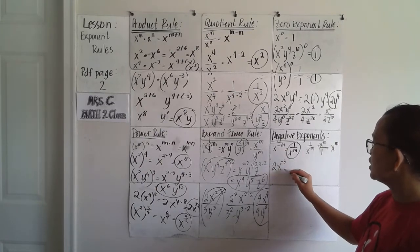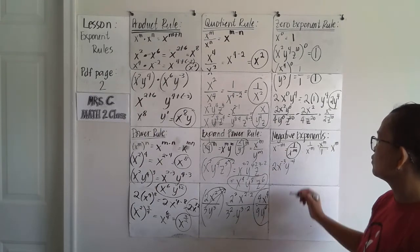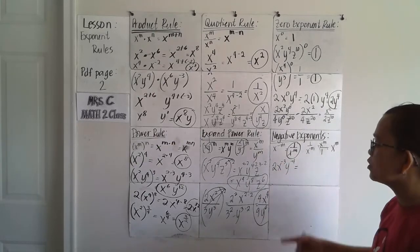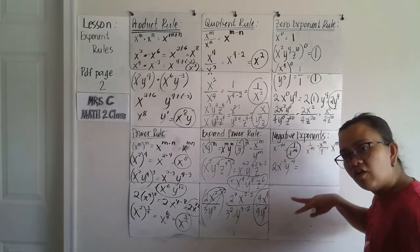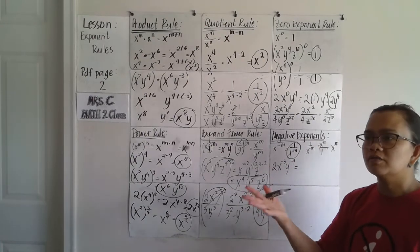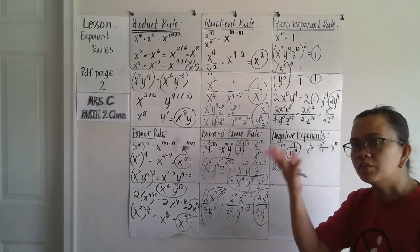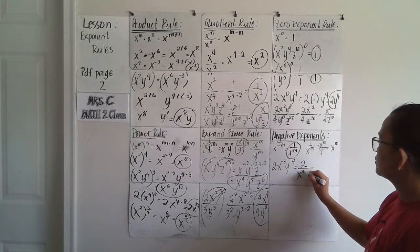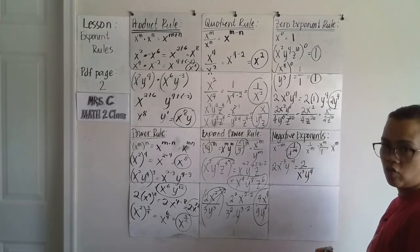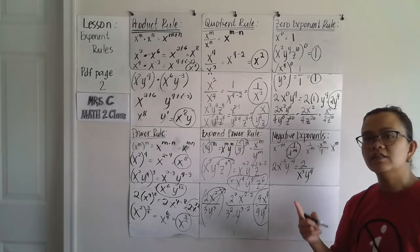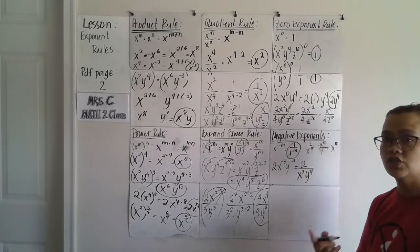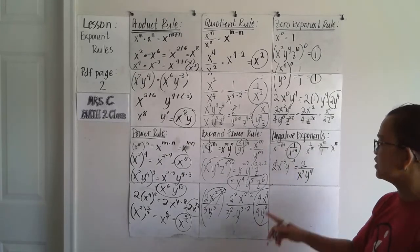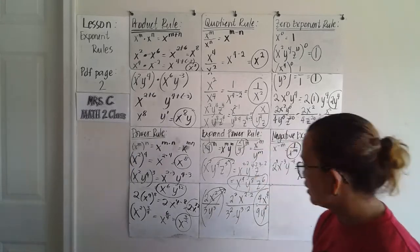Example: 2 times x raised to negative 3 times y raised to negative 4. All of this is in the numerator, so flip the negatives to the denominator. The answer is 2 over x raised to 3 times y raised to 4. The 2 stays on top because its exponent is positive 1.